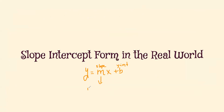Slope is our rate of change — how much the rate of something is changing, usually over time. For example, if we were looking at someone making goals in a soccer match, the rate would be the number of goals every match. The y-intercept, in these real-world problems, is usually our initial value — our starting point, the place where the problem begins.